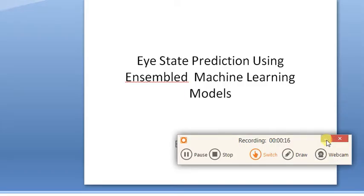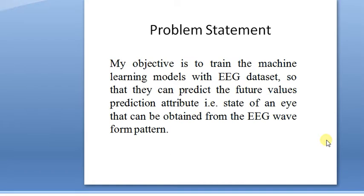Starting with the problem statement, my objective is to train machine learning models. I have used 13 machine learning models with the EEG dataset so that we can predict the future values of the prediction attribute, that is the eye state prediction. There are 14 EEG parameters which I have used and the 15th attribute is the state value.